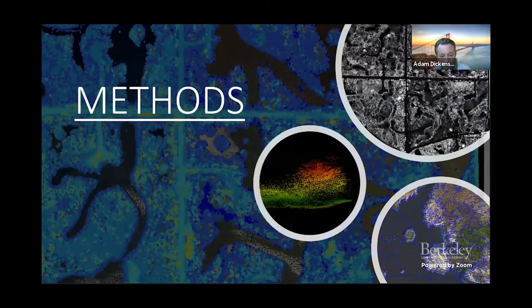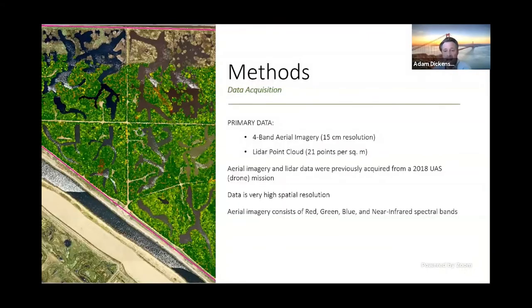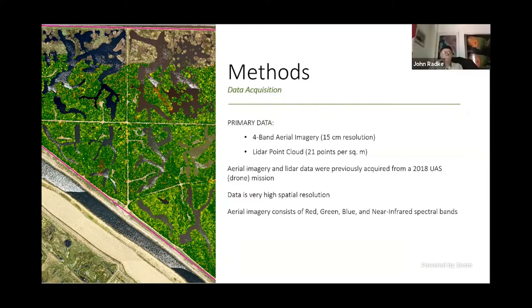So how I carried out my research. I had only two data inputs, but I had two great data inputs. The first was four-band aerial imagery at 15 centimeter resolution. And the second was LIDAR data at 21 points per square meter. The LIDAR points are representative of either ground or vegetation. And LIDAR is what I'm going to be using to analyze the vegetation height and structure.